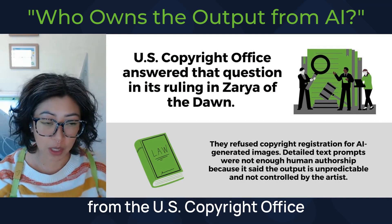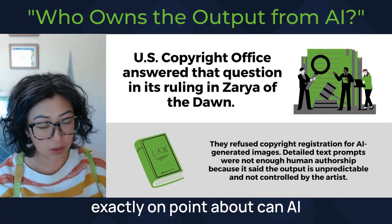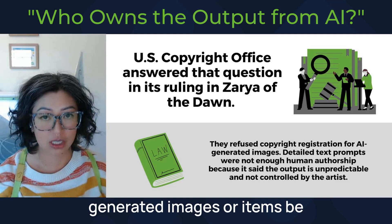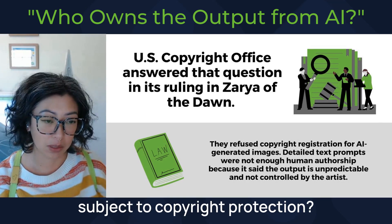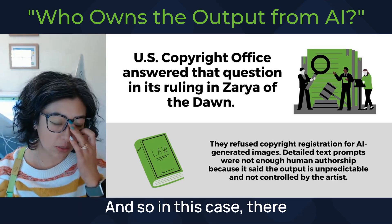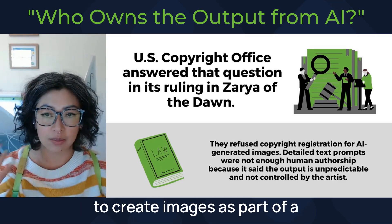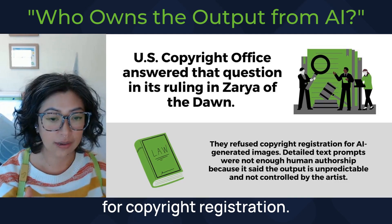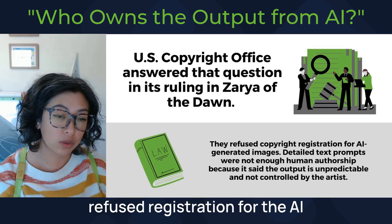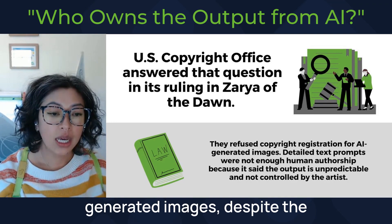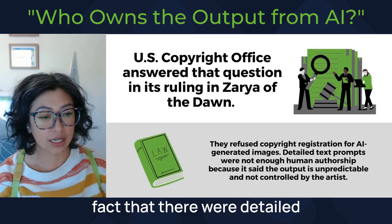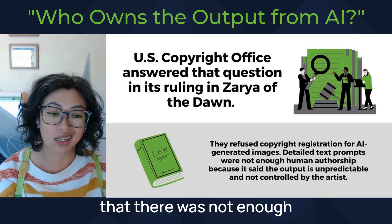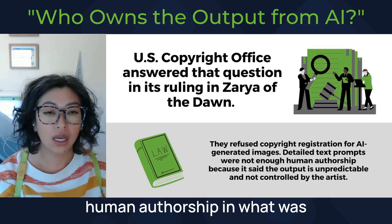There was a recent ruling from the Copyright Office, exactly on point, about whether AI-generated images or items can be subject to copyright protection. In this case, somebody used AI to create images as part of a graphic novel and tried to apply for copyright registration. The Copyright Office refused registration for the AI-generated images, despite the fact that there were detailed text prompts used to create the images and a lot of back and forth. The Copyright Office deemed that there was not enough human authorship in what was created.